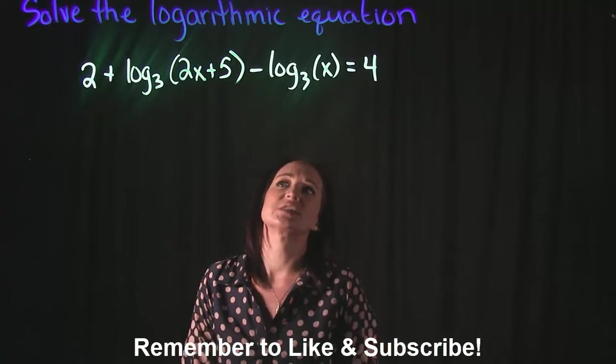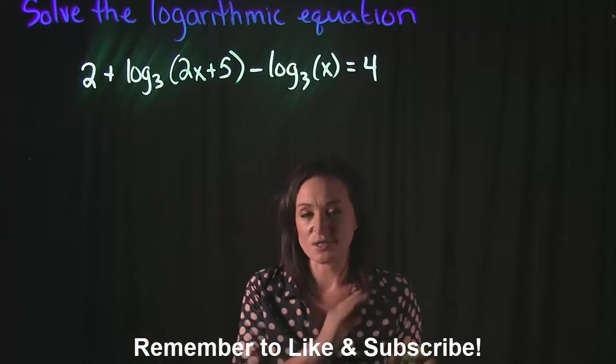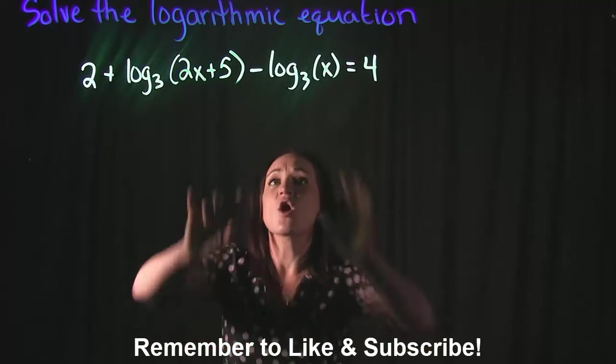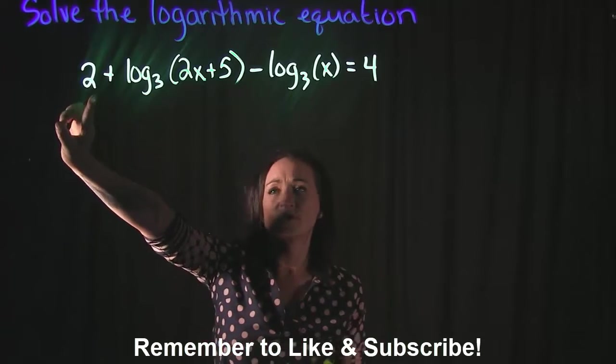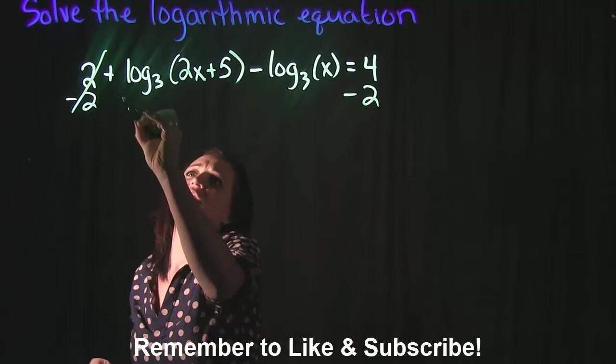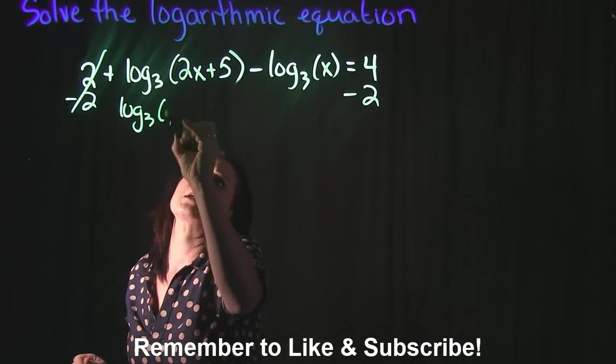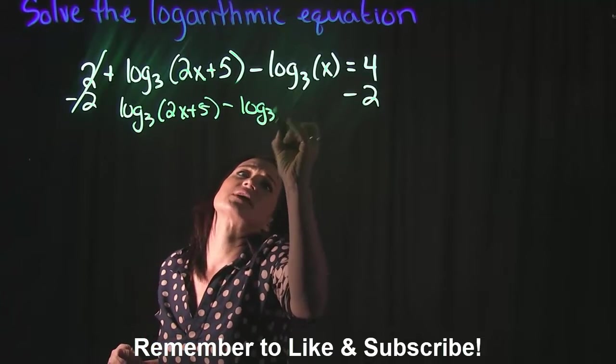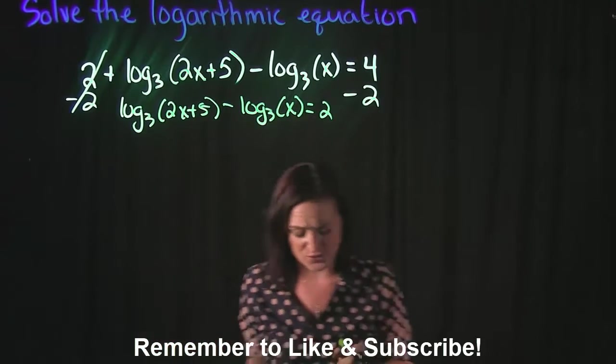So the first thing I want to do with this equation is I want to get the logs all by themselves on one side of the equation. And it almost is. The only thing I need to move is this 2. So the first thing I'm going to do is move this 2 over to the other side. I have log base 3 of 2x plus 5 minus log base 3 of x and that's now going to equal to 2.